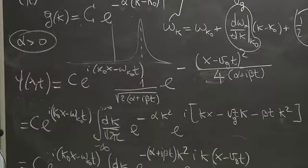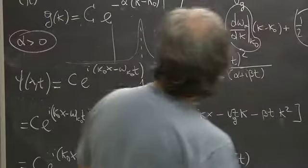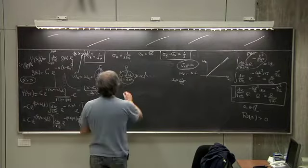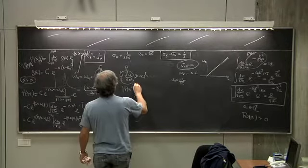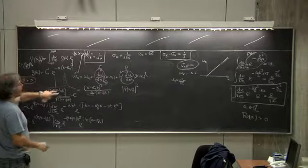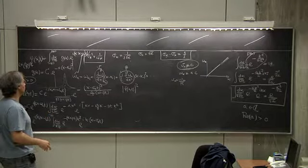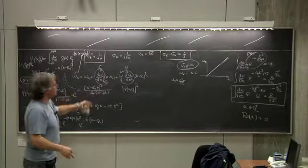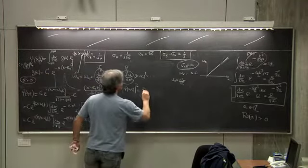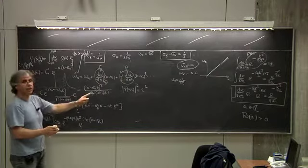This spreading is due to beta being different from zero — or equivalently, the second derivative of omega being different from zero. This is related to the curvature of the dispersion relation omega(k) versus k. And you will see in a second that it is related to h-bar and to the mass of the particle.